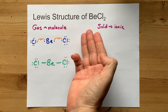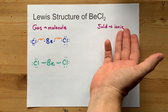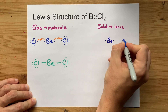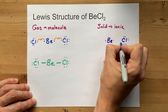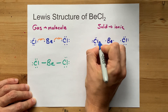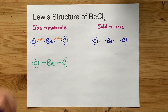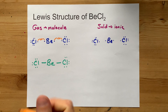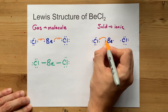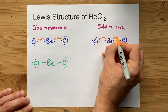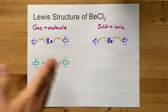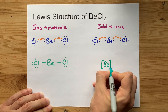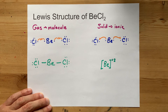But BeCl₂ can behave like an ionic crystal. In that case, you start in the same place: beryllium with two valence electrons and two chlorines with seven valence electrons each, and show a transfer of electrons from the metal to the non-metal. You donate that electron over there, and that electron over there. Your final Lewis structure would show the beryllium without its two electrons — it now has a +2 charge.